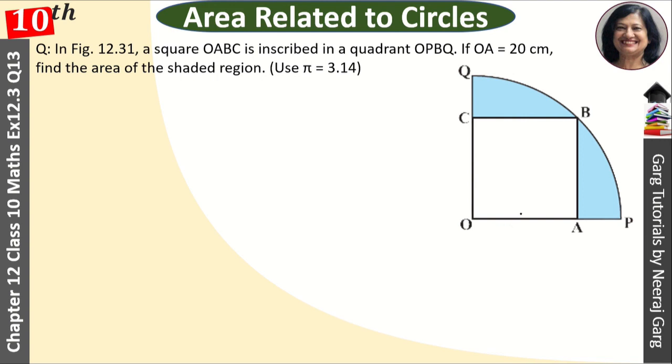I am given side OA, this is 20 cm. Since it is a square, this side will be equal to this side and this side. Now we have to find the area of shaded region. Now we don't know the radius.